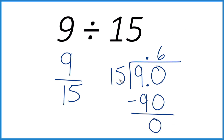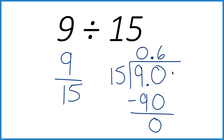So 9 divided by 15 is 0.6. Don't forget that decimal point. If you multiply 0.6 times 15, you will get 9.